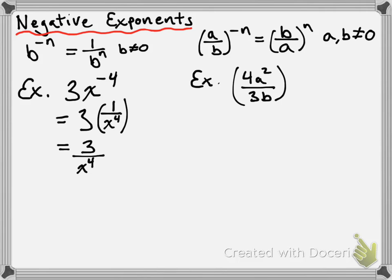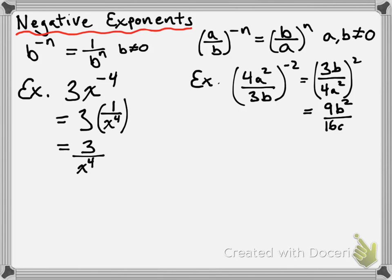Let's look at another example: 4a squared over 3b, all being put to the power of negative 2. According to the exponent law, we can evaluate this with a positive exponent by taking the reciprocal. The reciprocal of our fraction gives us 3b over 4a squared to the power of positive 2. That positive 2 affects both numerator and denominator, so we get 3b times 3b — which is 9b squared — over 4a squared times 4a squared, which is 16a to the power of 4.